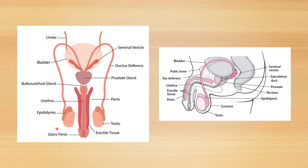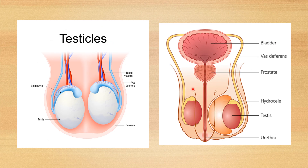Spermatogenesis happens in the testis, and after sperm is synthesized, it is passed into the epididymis. Where lies the testis? The testis is situated in a separate sac hanging away from the body; we can see that the testis is placed outside the abdomen.